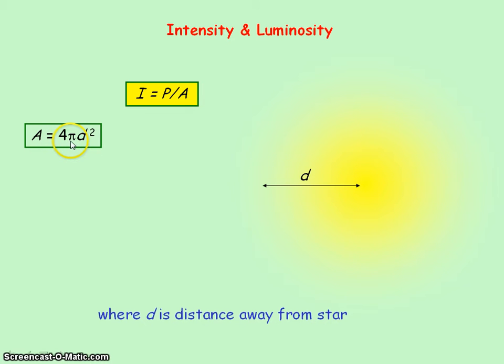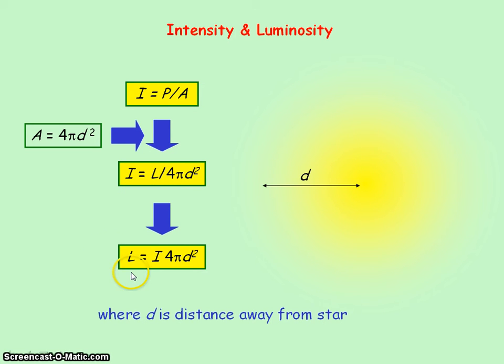If we consider a star of luminosity L, it radiates power in all directions in 3D space. So at distance d away from the star, we can determine its intensity. Remember the definition of intensity is the power radiated per unit area. And at the distance d away from the star, the total power will cover a surface area of 4 pi d squared. And so the intensity will equal the power, or the luminosity, divided by this surface area. And if we rearrange the equation to make the luminosity the subject, then that will equal the intensity times by 4 pi d squared. And so we can determine the luminosity of the star from the intensity at a distance d away.